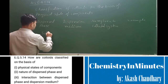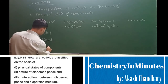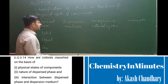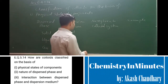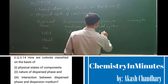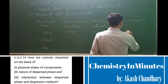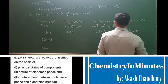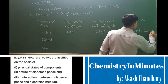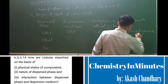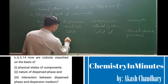The physical state of the dispersed phase may be solid, liquid, or gas. For a solid dispersed phase there may be a solid dispersion medium — the name of such a colloidal system is solid sol. For a liquid dispersed phase with a solid dispersion medium, the name of such a colloidal system is gel.